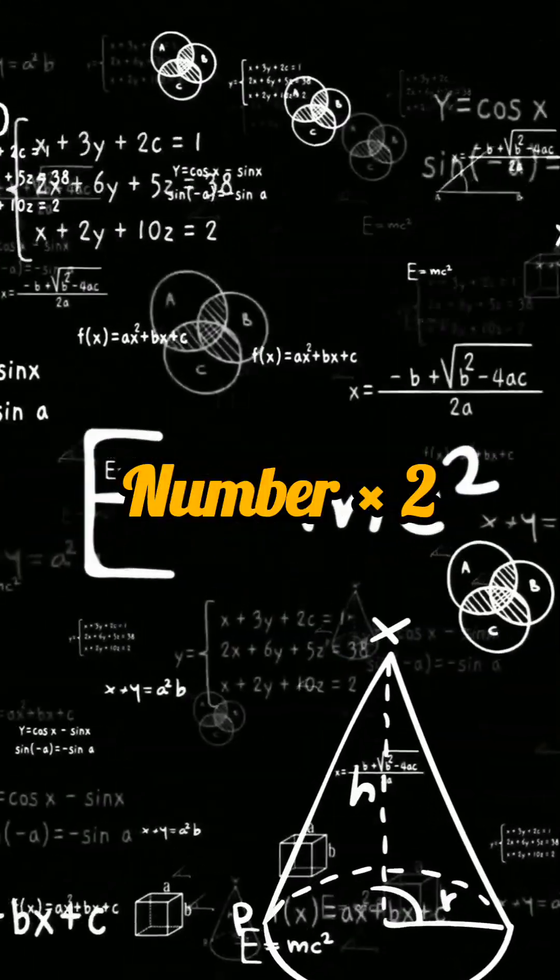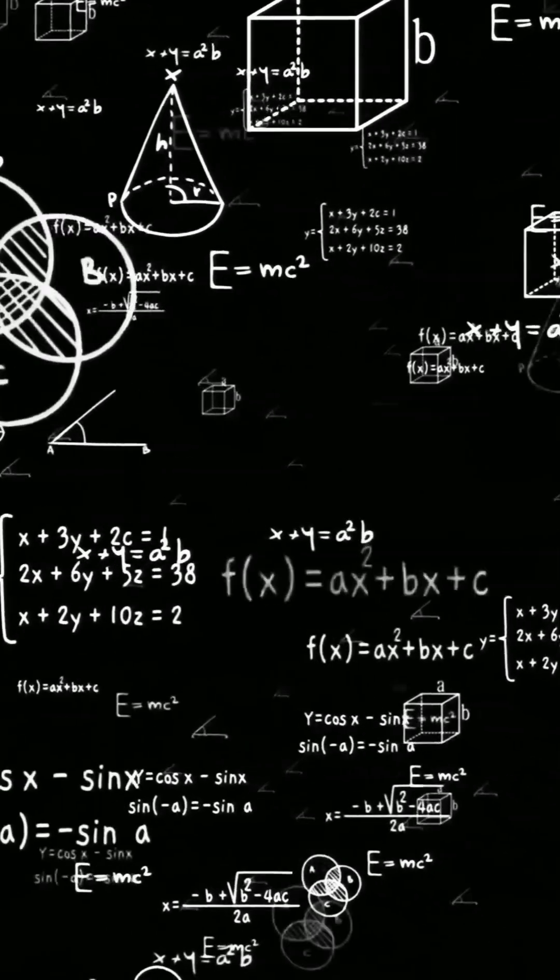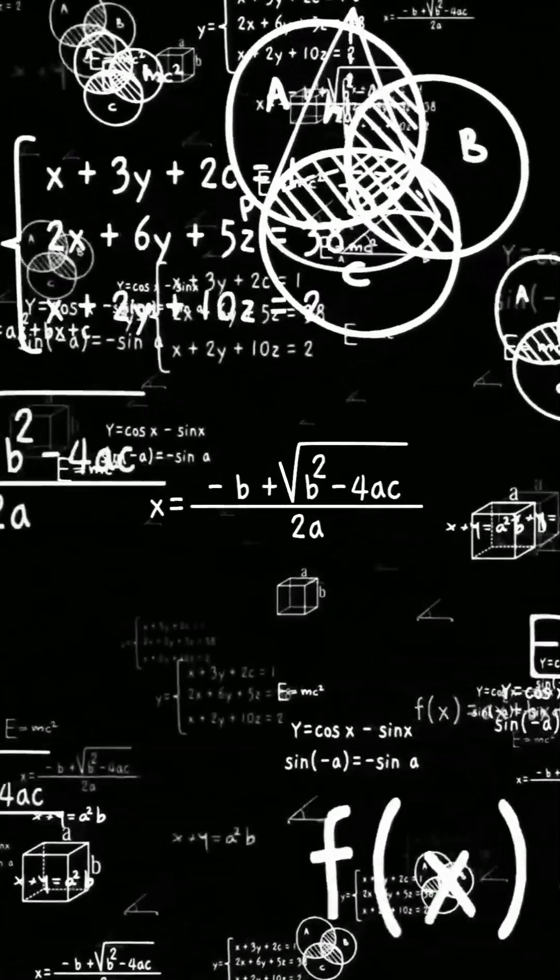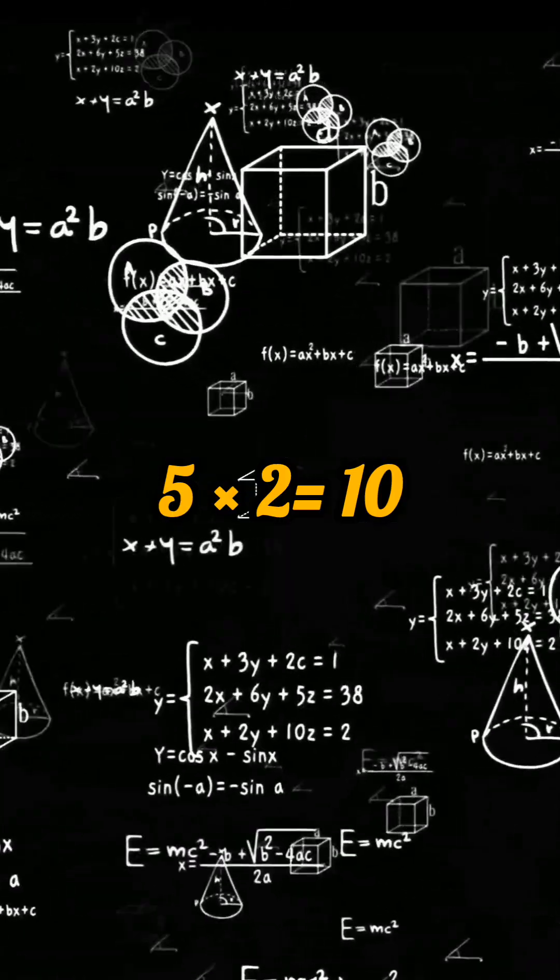Now double that number. This means you multiply the number you just thought of by two. For example, if you thought of five, doubling it would give you ten.